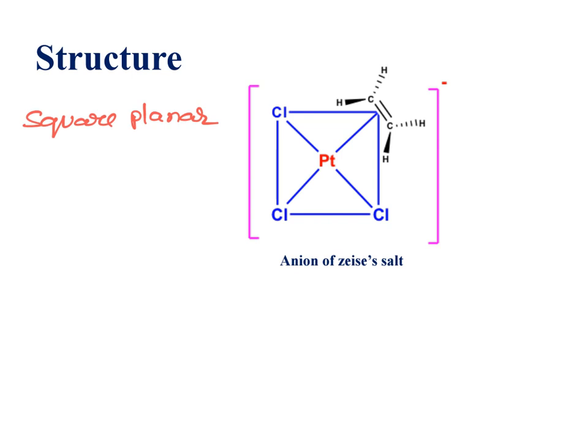In the square planar geometry, center of the square is occupied by the platinum metal. Three corners are occupied by chlorine atoms. The fourth corner is occupied by ethylene ligand.